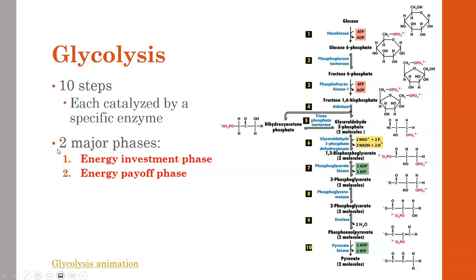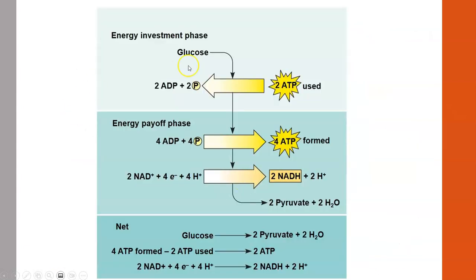There are two major phases of glycolysis: an energy investment phase and an energy payoff phase. The energy investment phase happens in steps one and three, where ATP is consumed. The energy payoff phase is later when we get a net of two ATP in total, because the two that are consumed are replaced by four that are produced. In the energy investment phase, two ATP are used, but four ATP are formed for a net gain of two ATP.